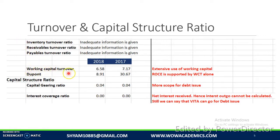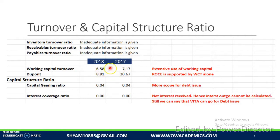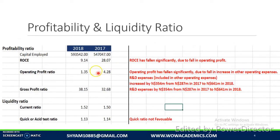The working capital turnover ratio has been maintained at a proper rate — it's 7 times sales in 2017 and 6 times in 2018, so more or less the same. If you see the DuPont ratio, it is the multiplication of the working capital ratio and operating ratio, which leads us to ROCE.